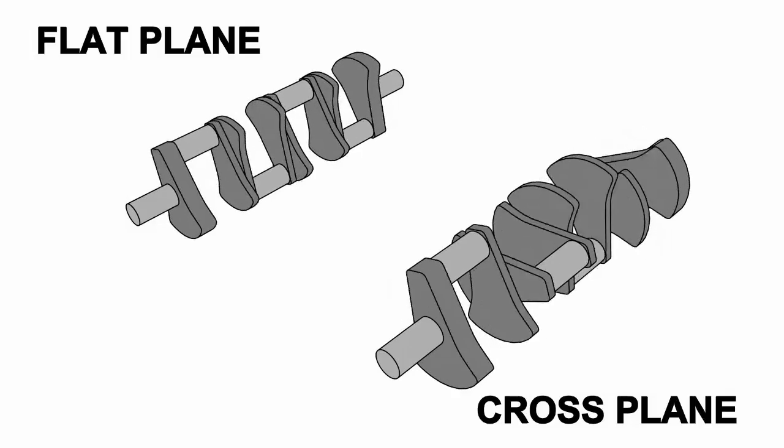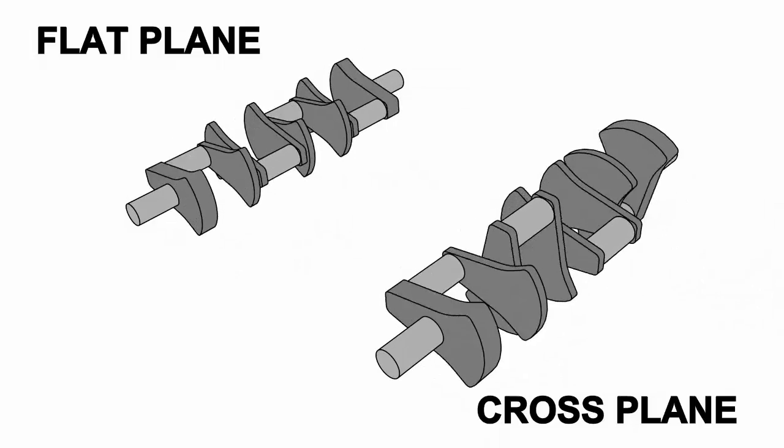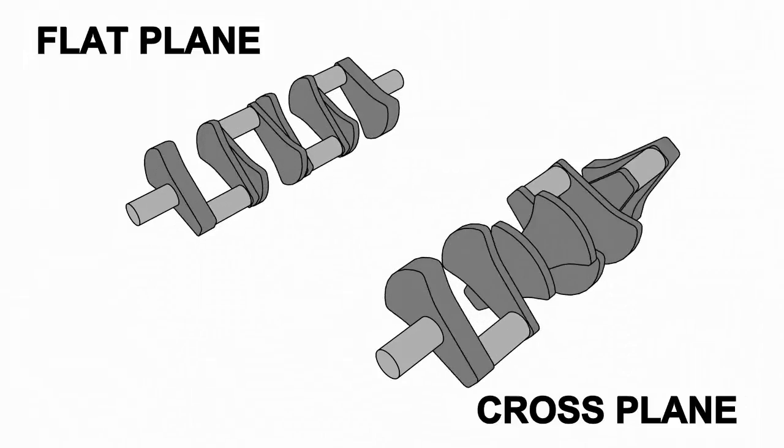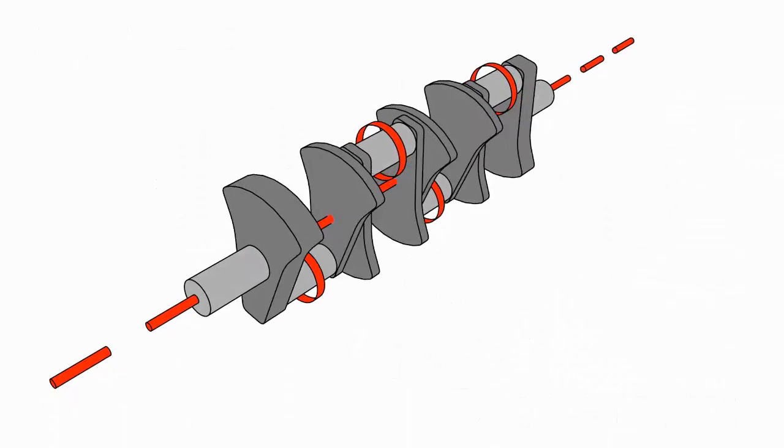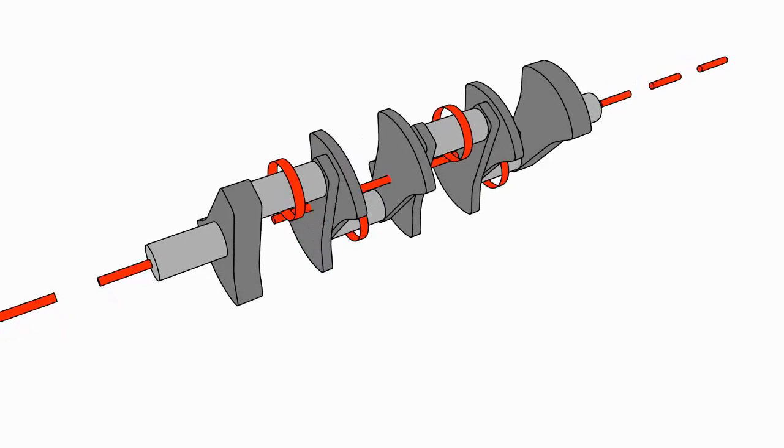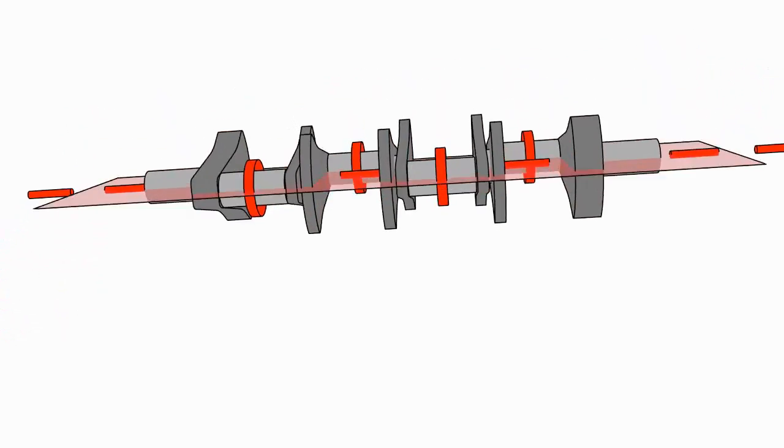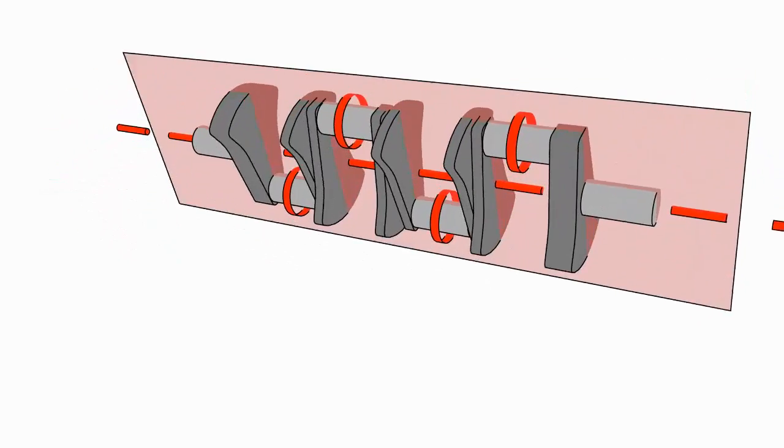Here you can see the flat plane crank in the upper left, compared to the more traditional cross plane crank in the lower right. A flat plane crankshaft gets its name from the way it looks. As you can see in this picture, the crank pin journals circled in red are 180 degrees out of phase from each other, so you could cut right through those center points using a two-dimensional plane, hence the name flat plane crank.